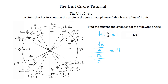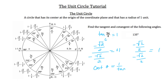Now for the cotangent of 5 pi over 4: cotangent is 1 over tangent, or cosine over sine. The cosine is negative root 2 over 2 and the sine is also negative root 2 over 2, so you still get positive 1. The cotangent of 5 pi over 4 is also positive 1.